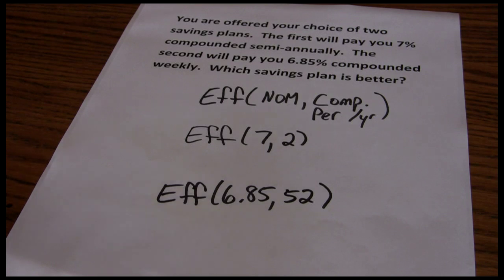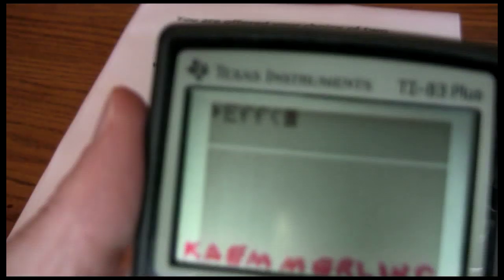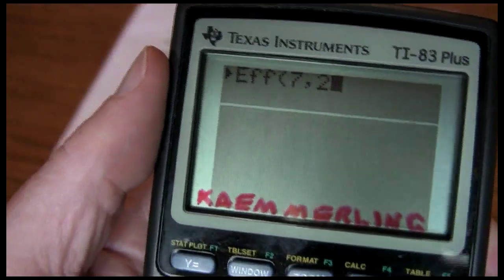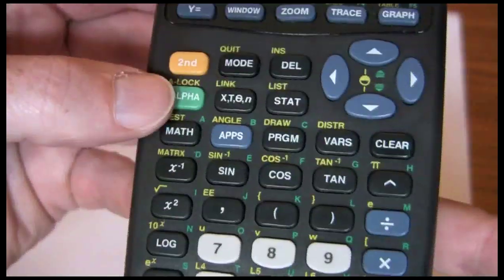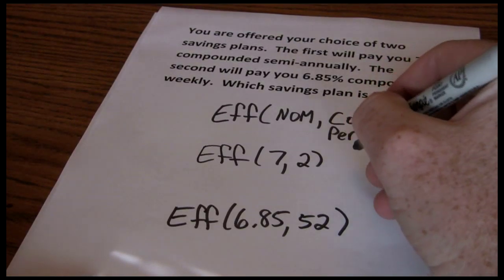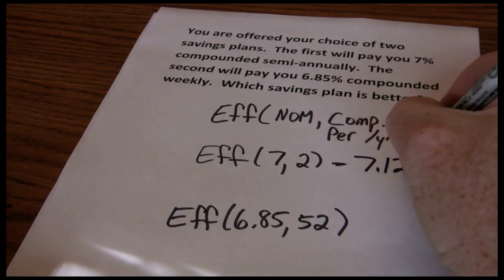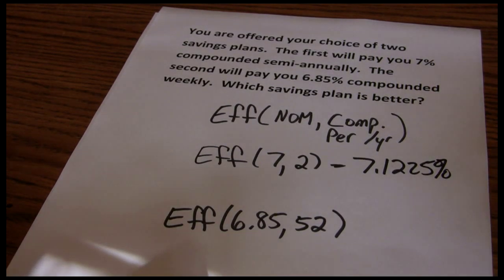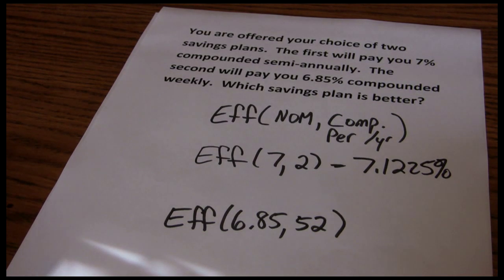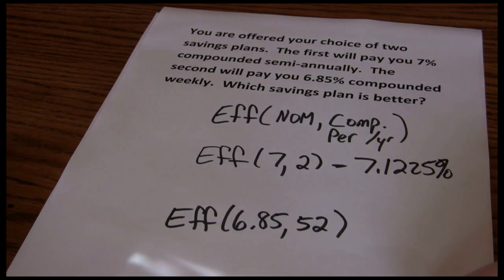Whichever one is higher is the better savings plan. So we start out with the effective rate: 7%, use our comma, 2 compounding periods per year, and close out that bracket. Now we want to solve — solve is shift, solve — and we get an effective annual rate of 7.1225%. What this is telling us is that 7% compounded semi-annually is the same as earning 7.1225% compounded annually. The effective interest rate just converts everything to its annual compounding equivalent.